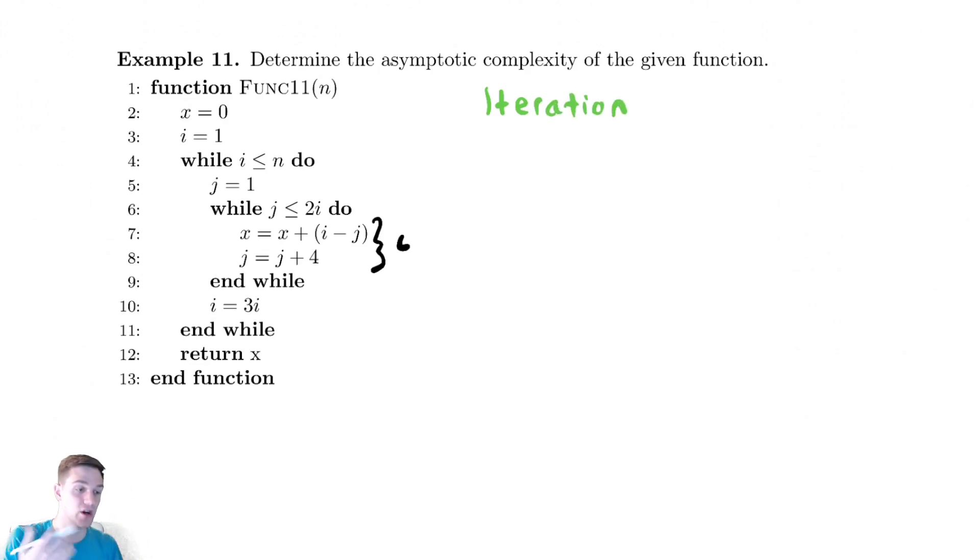Iteration. And the loop variable for the inner while loop, which is j, and then let's see what happens. j starts at 1. After one iteration, we are adding by 4, so we have j equals 5. After two iterations, we add by 4 again.